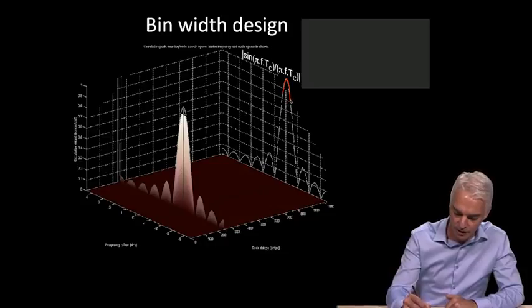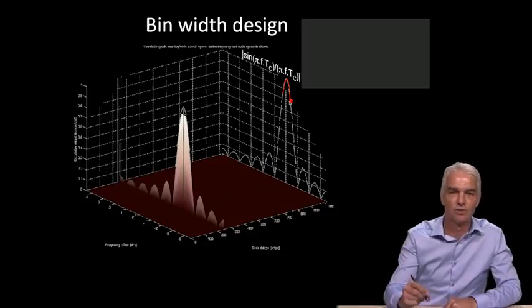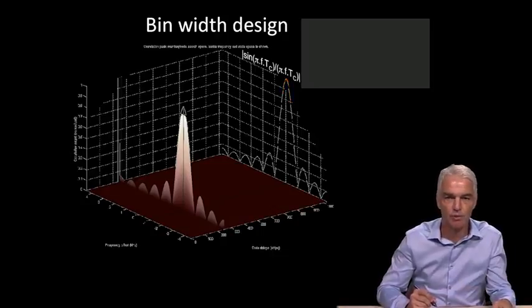If you're searching at this frequency here for the signal, instead of getting the peak here, you're going to pick up a correlation peak at a magnitude there. We have to decide how much of that peak we're prepared to give up when we do our search.